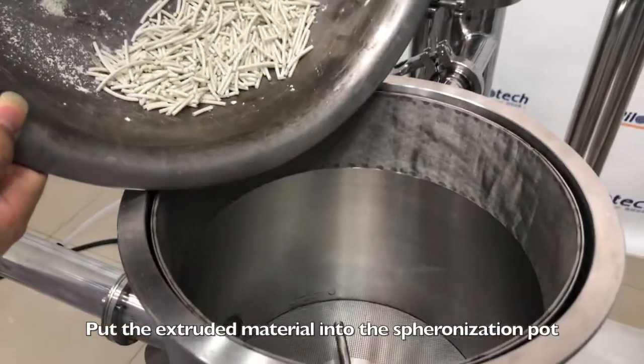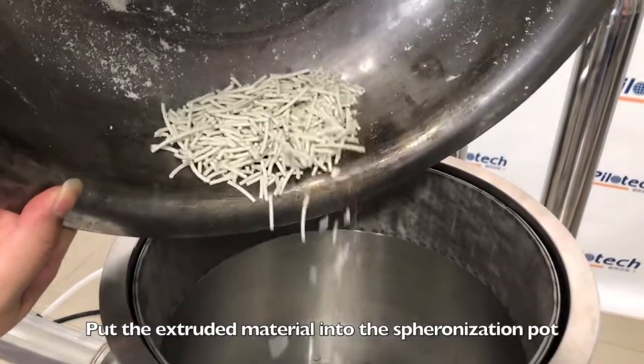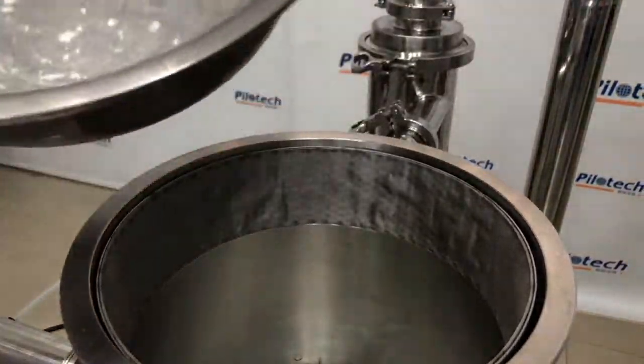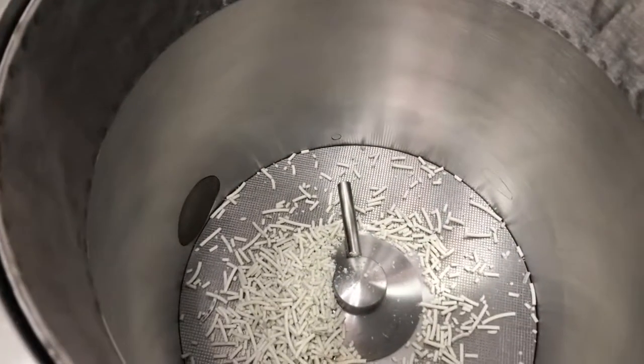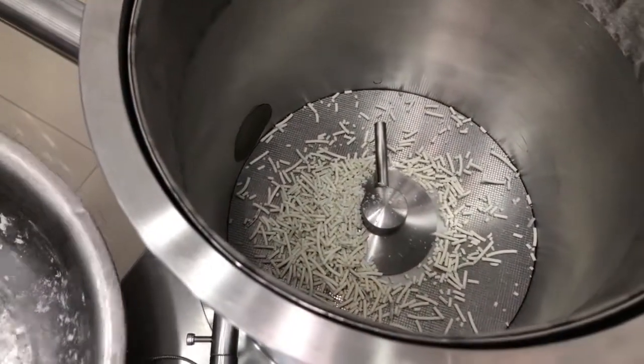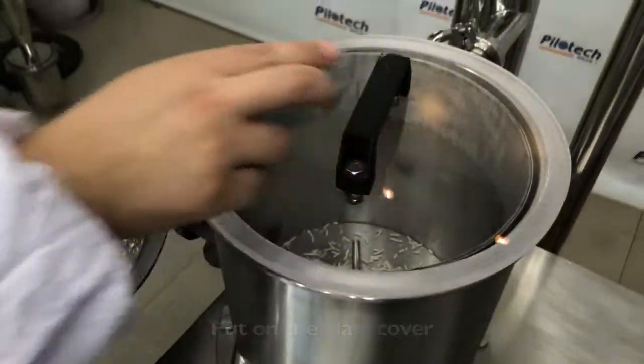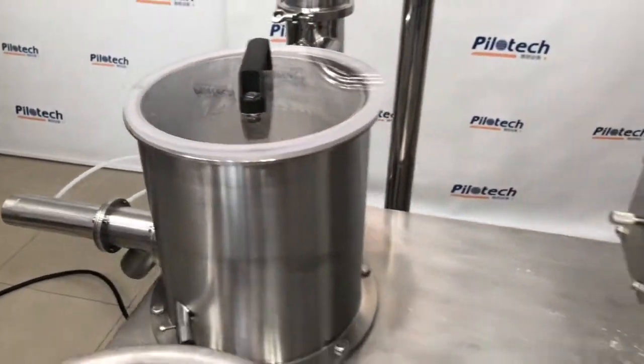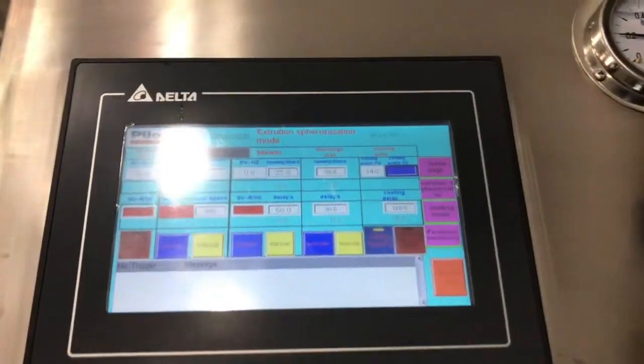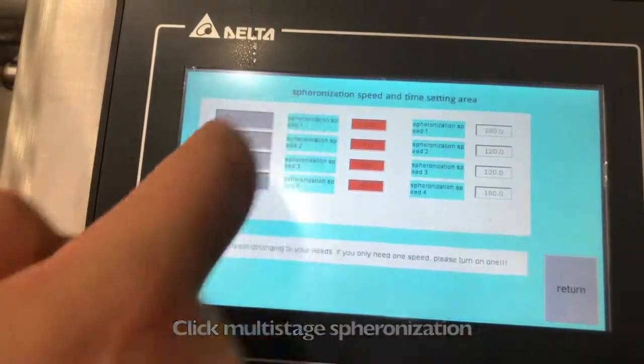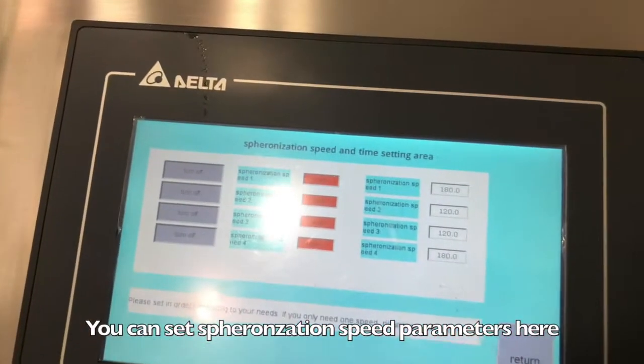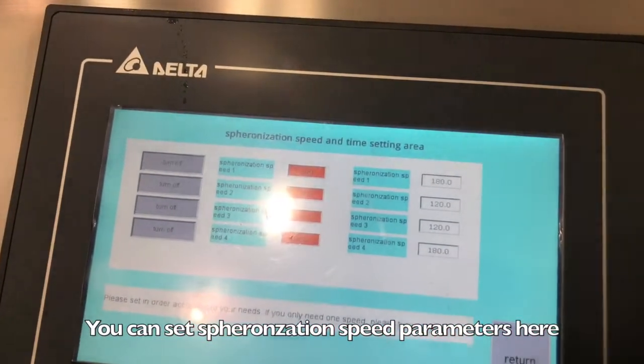Put the extruded material into the spheronization pot. Put on the glass cover. Click multi-stage spheronization. You can set spheronization speed parameters here.